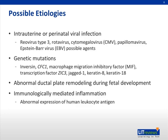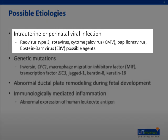Several possible etiologies of biliary atresia have been described. One possible etiology is intrauterine or perinatal viral infection. Several viruses have been identified as possible agents, including reovirus type 3, rotavirus, cytomegalovirus, papillomavirus, and Epstein-Barr virus.